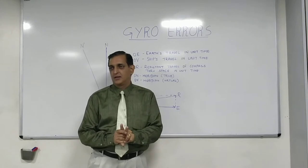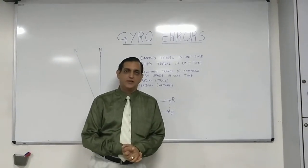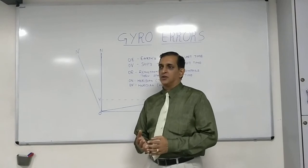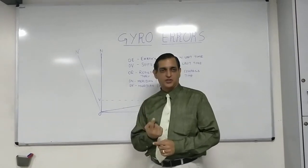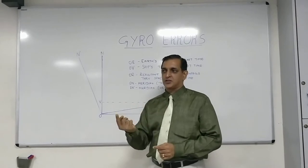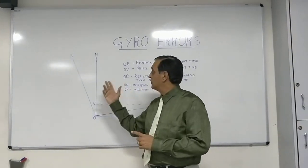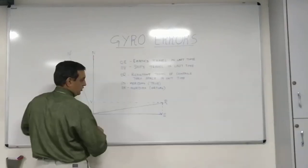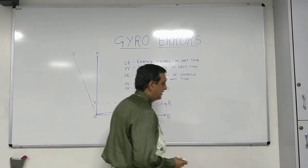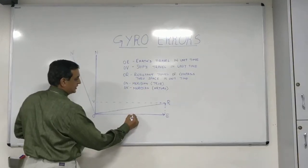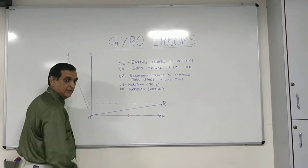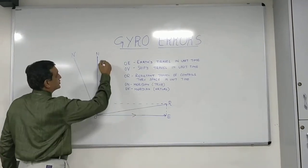One is due to the speed of the vessel and the other is due to the latitude. Now, when we say speed, basically how does the gyro know which is north? What the gyro does is it basically senses the rotation of the earth which we said is from west to east. So it senses how the earth is rotating and it knows that from west going to east, that is the east. 90 degrees to that is north and that is where the gyro settles.